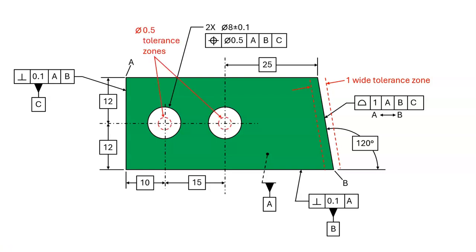Let's look again at the tolerance zones. The tolerance zone for the left hole is centered exactly 10 from datum C. The tolerance zone for the right hole is centered exactly 25 from datum C. The top of the profile tolerance zone is exactly 50 from datum C. The tolerance zones never move. The holes move and the surface moves.